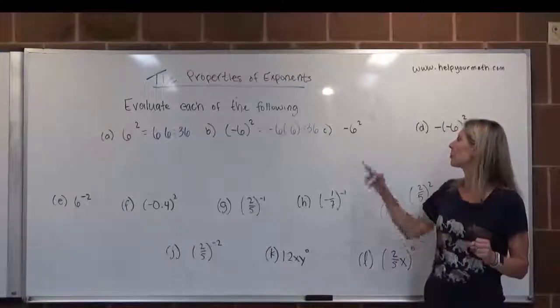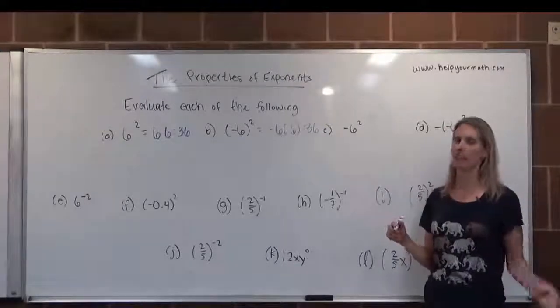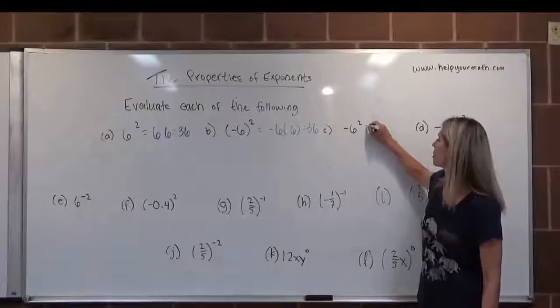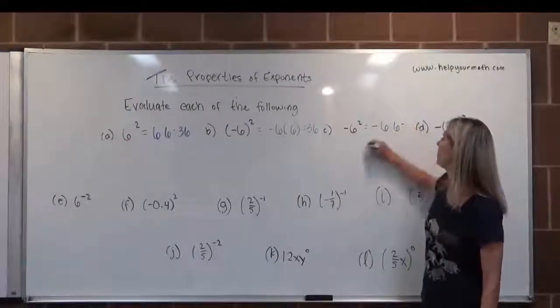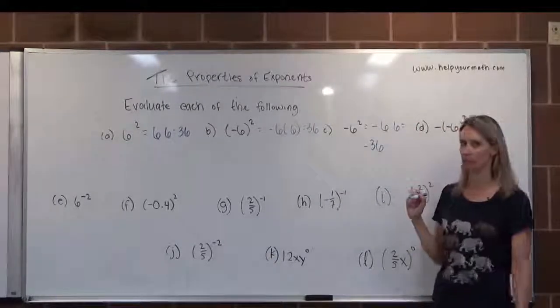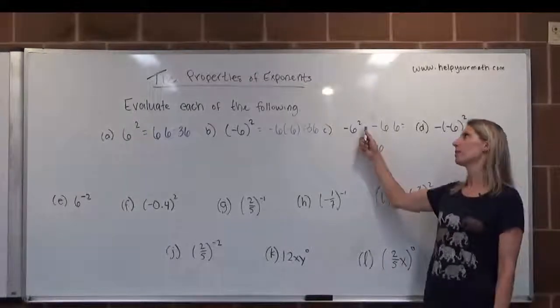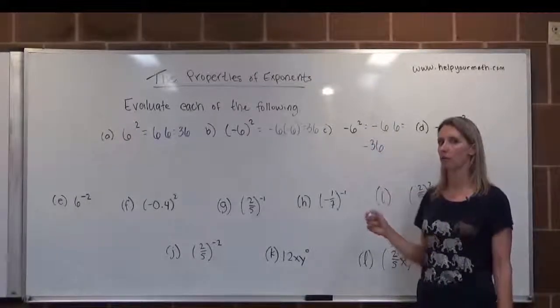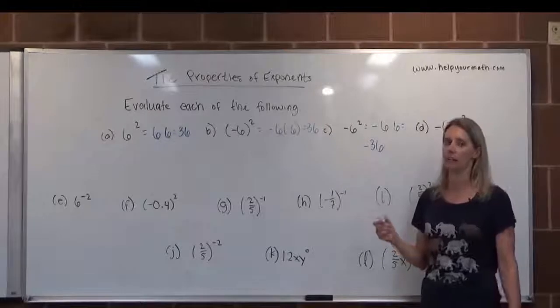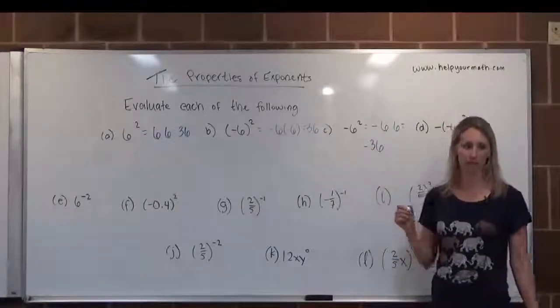So actually, what we're squaring is just the 6, and then we just negate the result. So really, this is going to be negative 6 times 6, and this one will be negative 36. Again, in order of operations, exponents has priority over multiplication, and that negative is treated as multiplication. So this one should be negative 36.